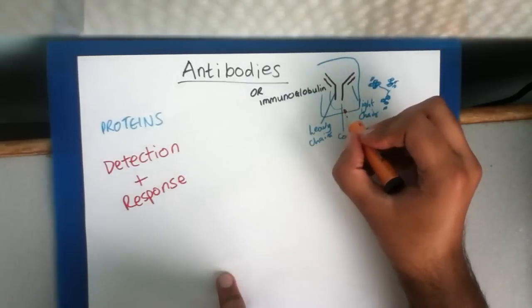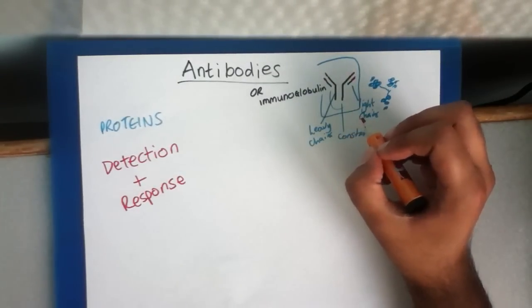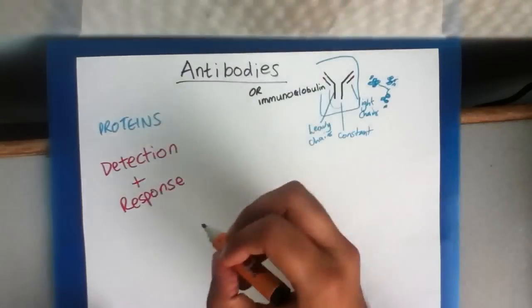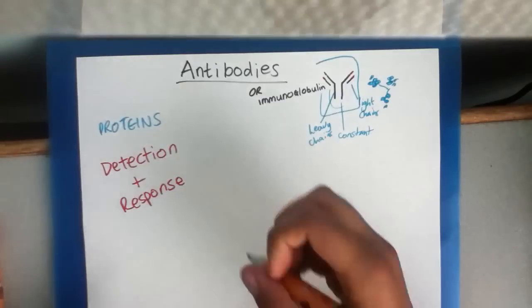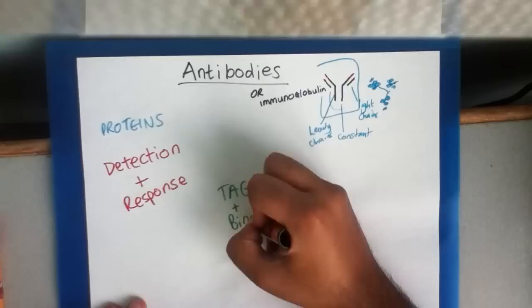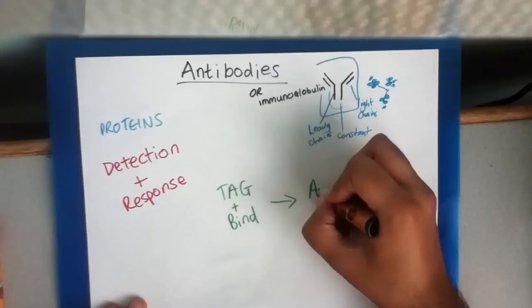Now we've looked into the structure here. So let's look at how this affects its function. The way an antibody detects and responds is in a type of tagging or binding mechanism. They tag and bind onto foreign bodies, or more specifically, antigens.